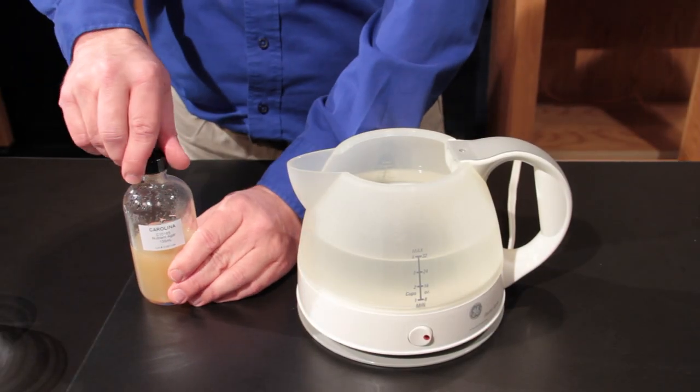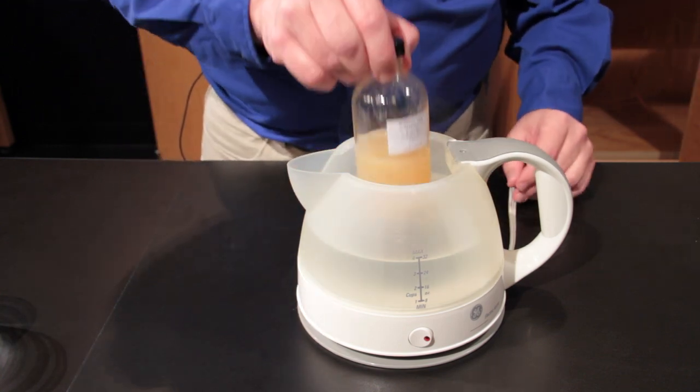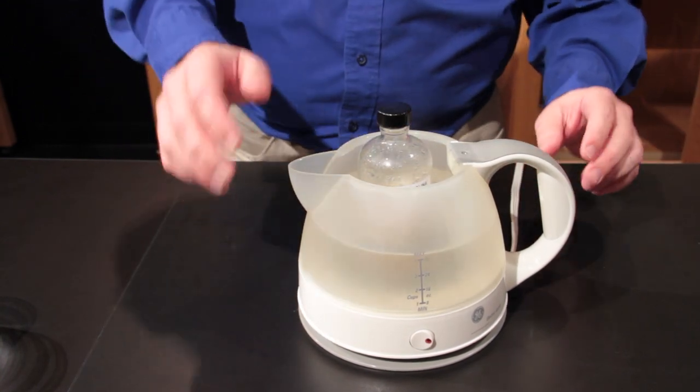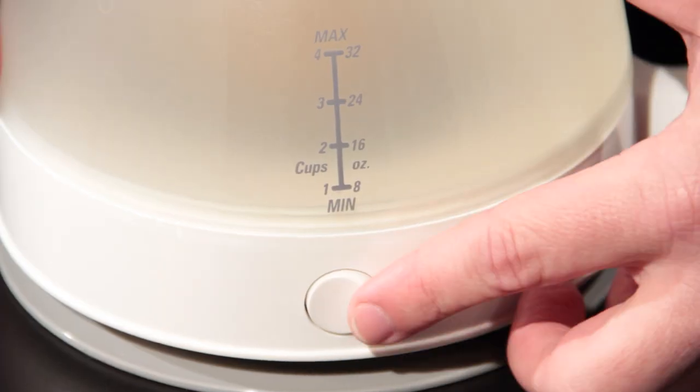Loosen the bottle cap but don't remove it. Set the bottle in the pot and check the water level. The water level should be slightly above the agar. Now you can begin to heat the water.